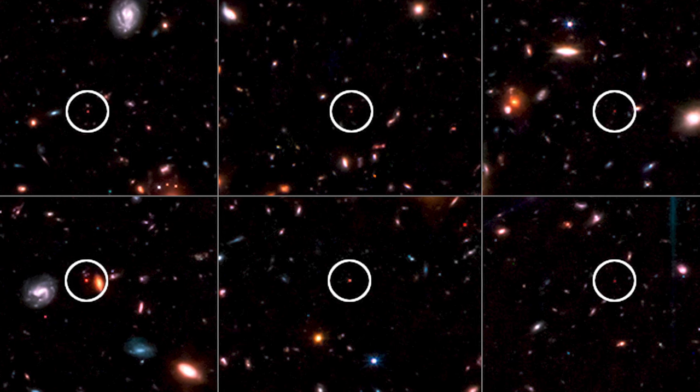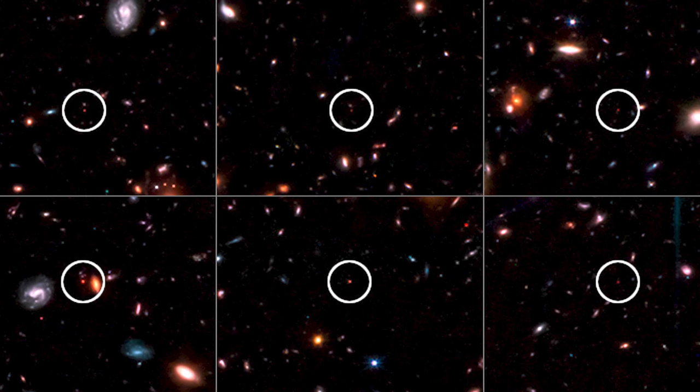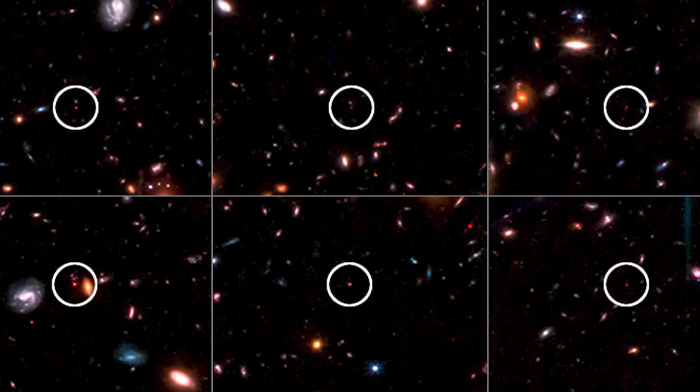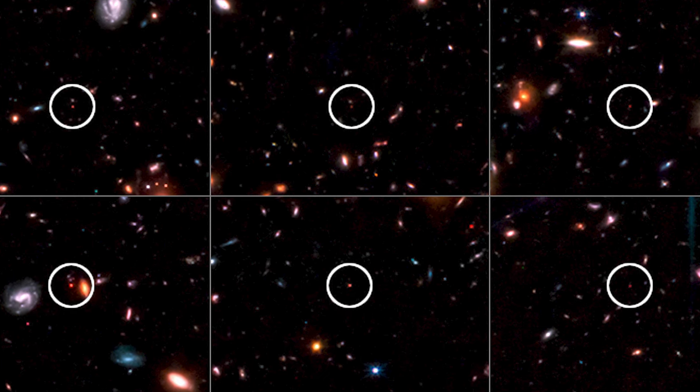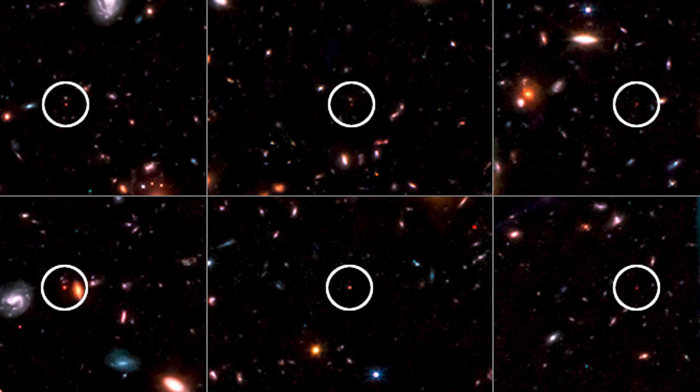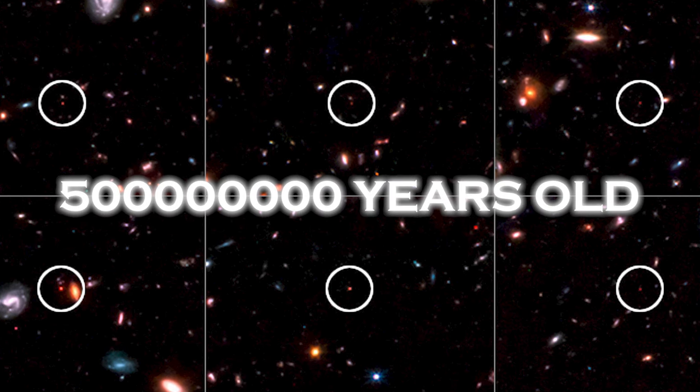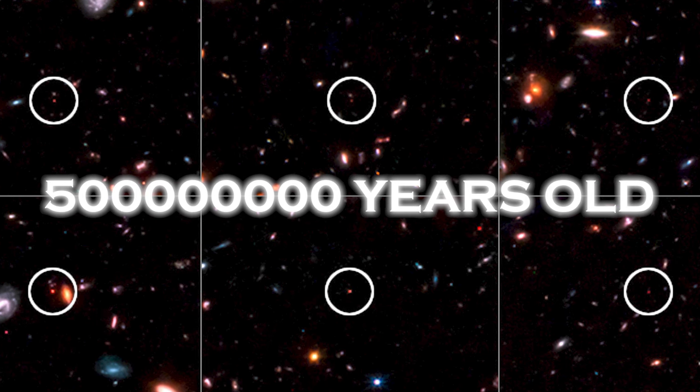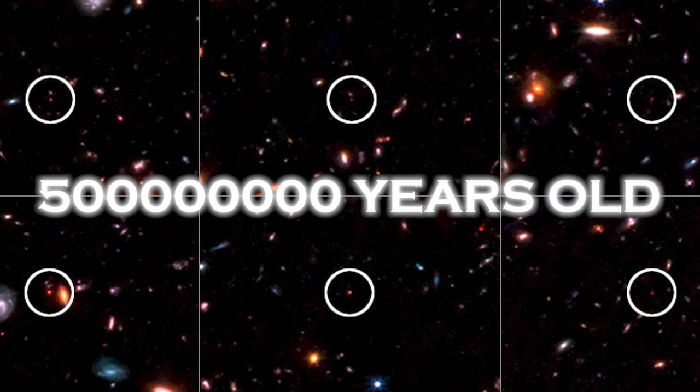However, the question arises: why does the discovery of these six large galaxies contradict the conventional description of the origin of the universe? These galaxies should be no larger than the Milky Way galaxy, which is only 500 million years old. Something doesn't add up, and perhaps we need to revise our theory of the creation of the universe.